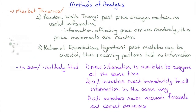The second theory is the Random Walk Theory — there's a great book called A Random Walk Down Wall Street I strongly recommend. Random walk theory states that past price changes contain no useful information. Since technical analysis is the study of historical stock prices to identify patterns, random walk theory is essentially saying technical analysis is useless. So the Efficient Market Hypothesis says both fundamental and technical analysis are useless; random walk says technical analysis is useless.